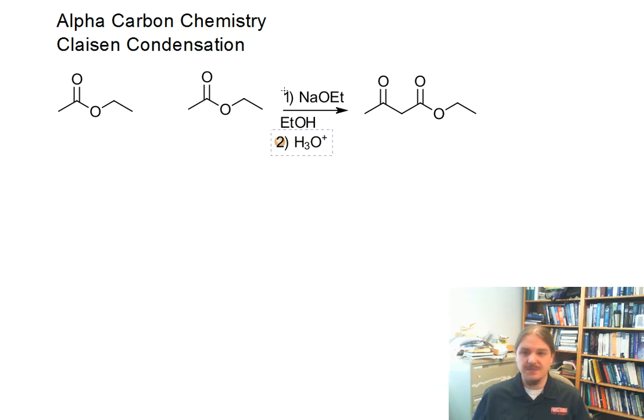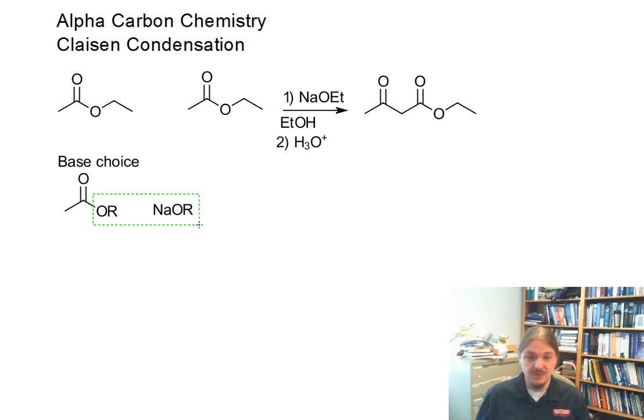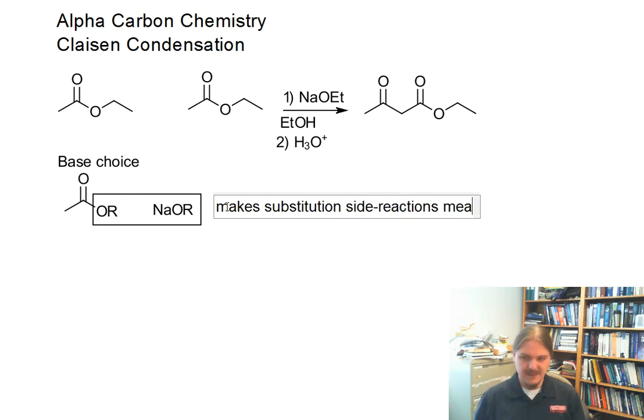First thing I want to note is that base choice is important for the Claisen condensation. You either need your base choice as an alkoxide anion to match the identity of the alkoxide group on your ester. And this is important because this makes substitution side reactions basically meaningless.